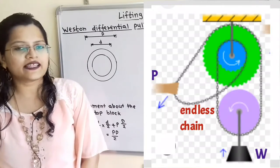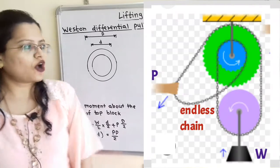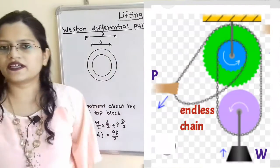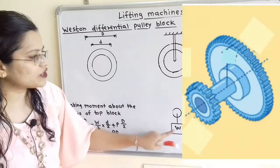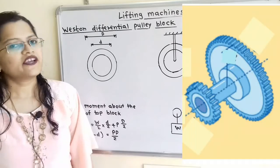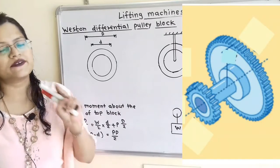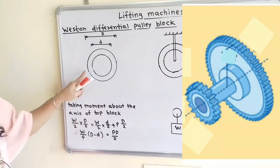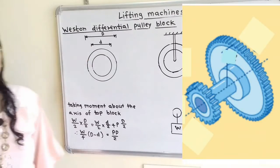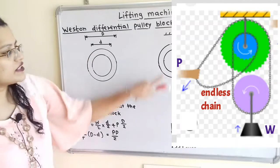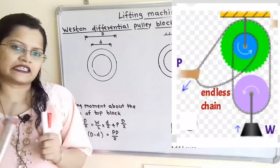Let us understand the arrangement of the western differential pulley block. The top block is connected to the fixed support and the bottom block is connected to the load W. If we observe the top block, it has two wheels with different diameters. The larger wheel has diameter capital D and the smaller wheel has diameter small d. These two blocks are connected with a single endless chain.